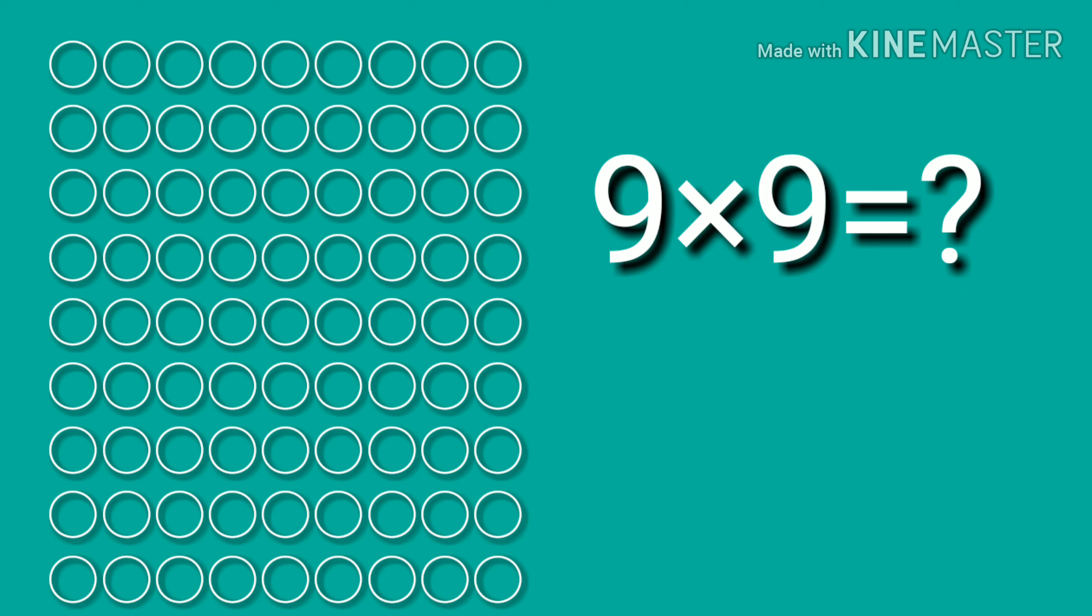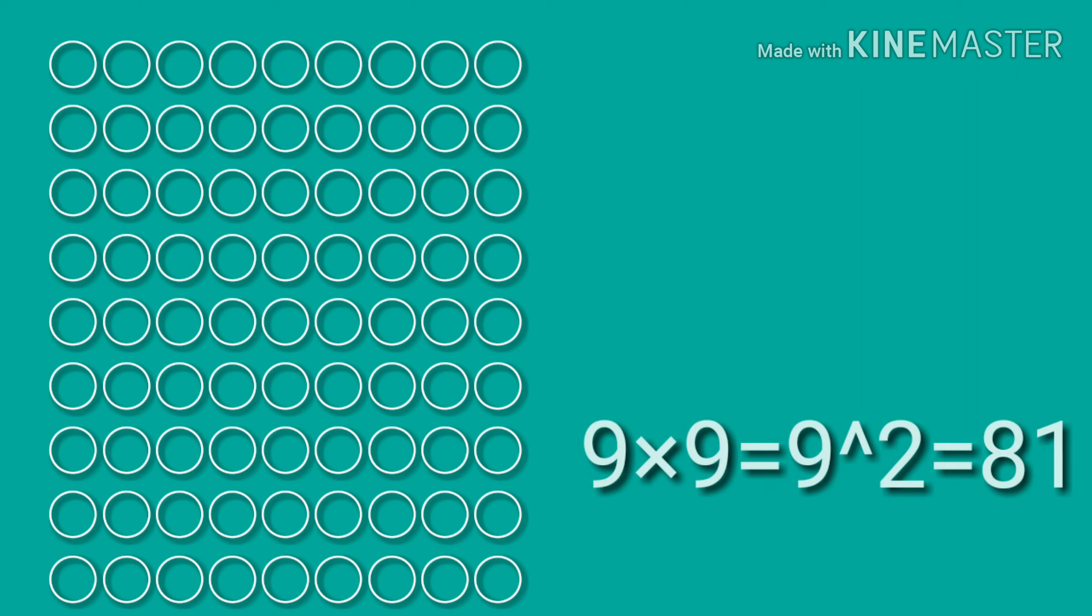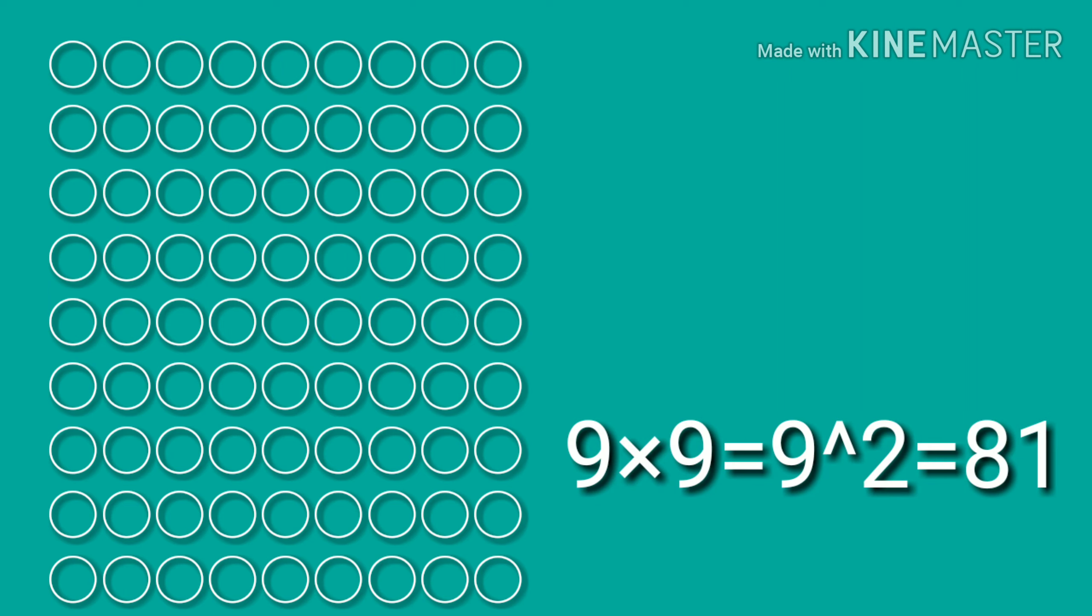9 into 9 is equal to? You are right. 9 into 9 is equal to 9 power 2, which equals 81.